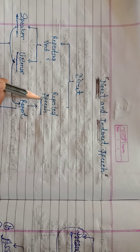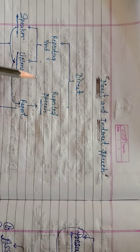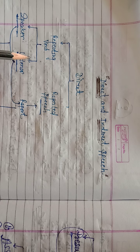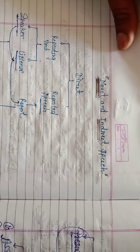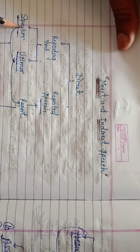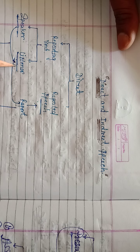First of all, we know what is the reported speech and reporting verb. In the reporting verb, there are two persons: first one is the speaker, and the second one is the listener. Sometimes we don't mention the listener.